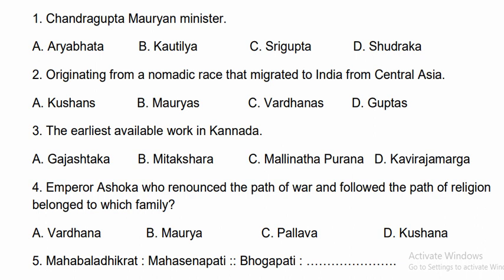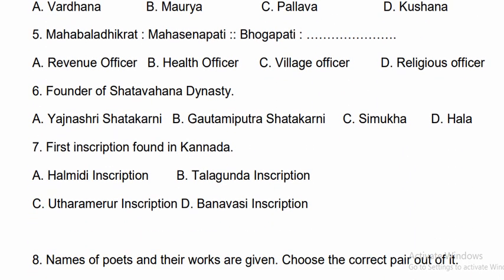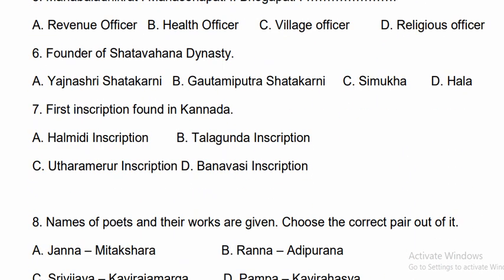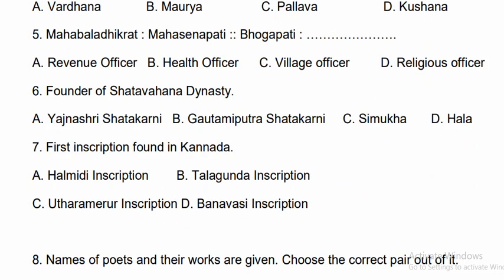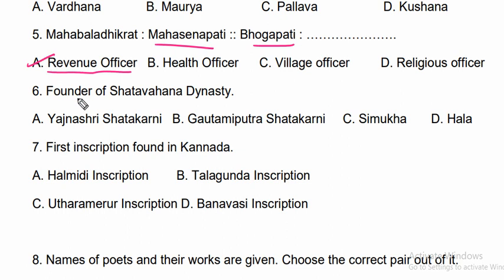Question five: Mahabaladi Kruta is called the Mahasenapati. And the Bhagapati is called the revenue officer. Therefore option A is the correct answer.